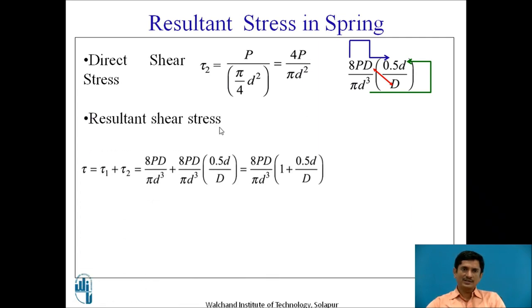The resultant shear stress, if I add these two stresses, torsional shear stress and direct shear stress. First term is torsional shear stress, second is the direct shear stress. I can get the common term 8P D upon pi d cube and in the bracket what remains is 1 plus 0.5 d by D. But we know.